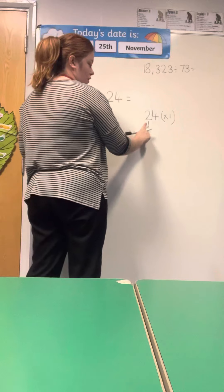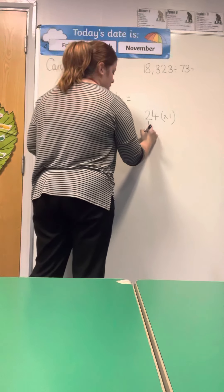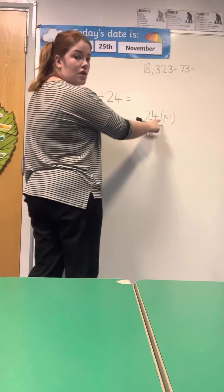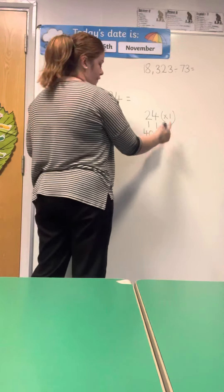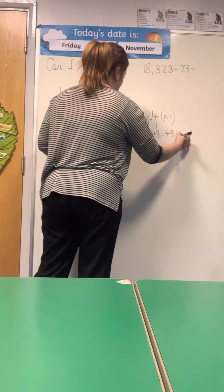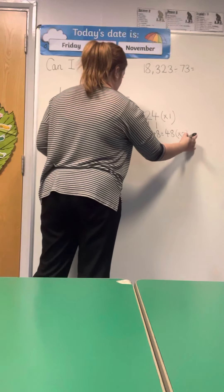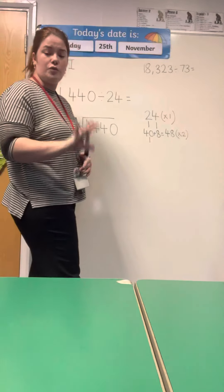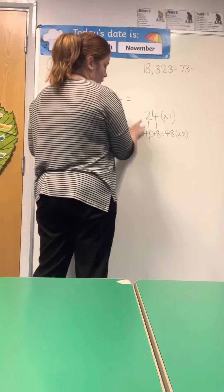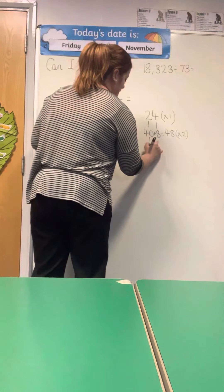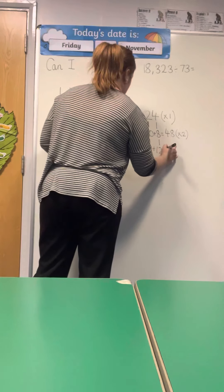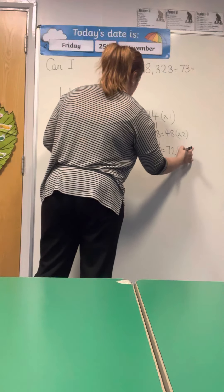First I'm going to partition my tens, so I'm going up in 20s. My next multiple of 20 is 40. And in my ones I'm going up in 4s, so my next multiple of 4 is 8. In brackets I'm going to put times 2. So counting: 20, 40, 60 in the tens and 4, 8, 12 in the ones — so 24 times 3 is 72.